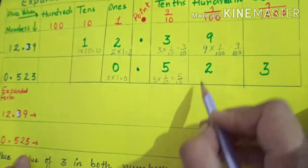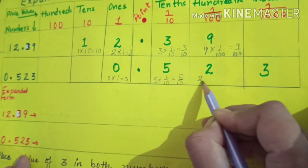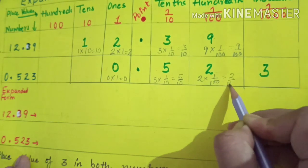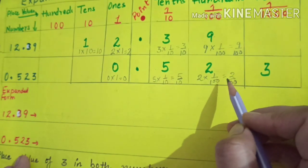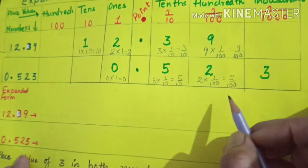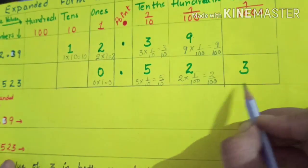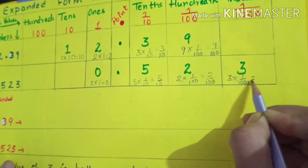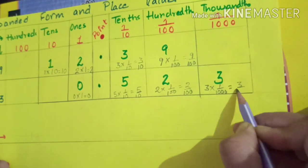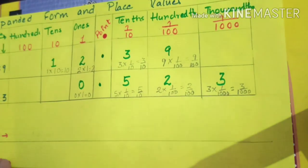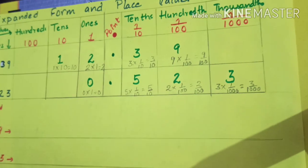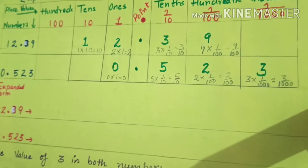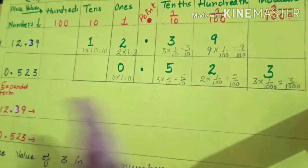The place value of two will be two multiplied by one over one hundred, which equals two over one hundred, or two-hundredths. Three is at the thousandths place, so the place value of three will be three multiplied by one over one thousand, which equals three over one thousand, or three-thousandths. Now I have written all the place values.